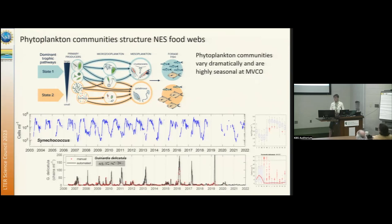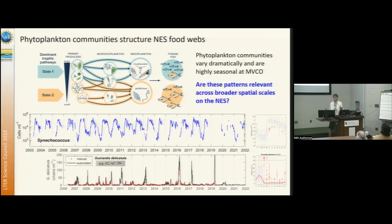These are the time series for our nearshore observatory site, where you can see there's a very distinct seasonal trade-off between these organisms. The small cells dominate in the summer and the larger cells dominate in the fall and winter. We've known this for a while. The big question is: how much can we take this knowledge up to larger spatial scales within the system?